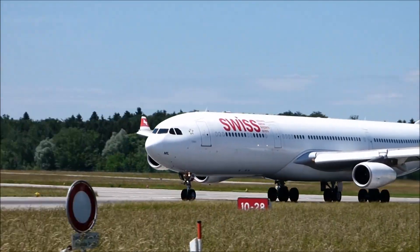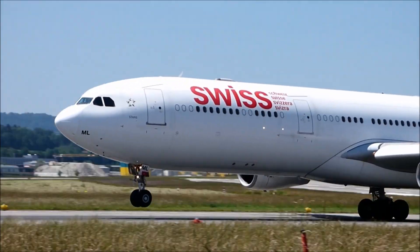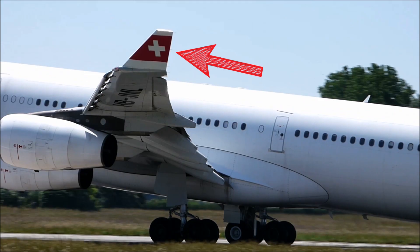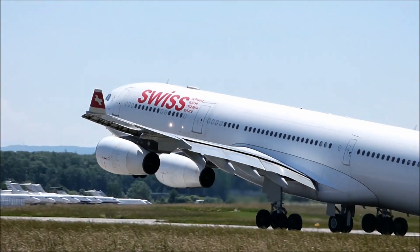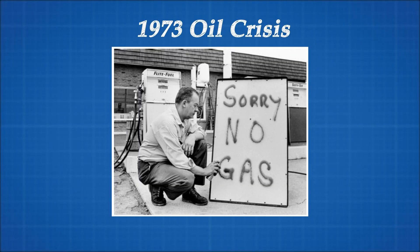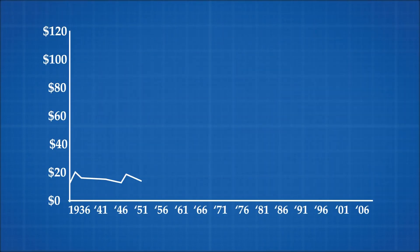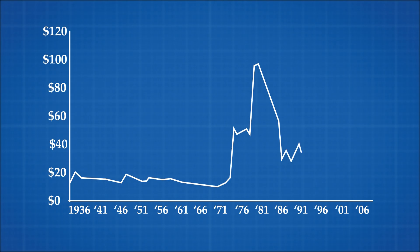Have you ever looked out your plane window and wondered what those little curly bits at the end of the wing were for? The development of winglets, as we see them today, started during the 1973 oil crisis. The Arab states put an oil embargo on the United States for providing aid to Israel during the Yom Kippur War, causing oil prices to skyrocket and forcing engineers to get creative to reduce fuel consumption.